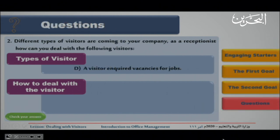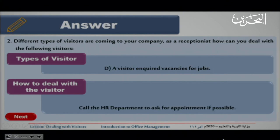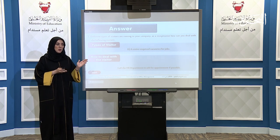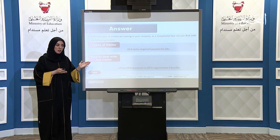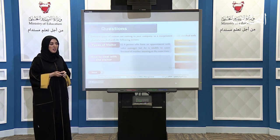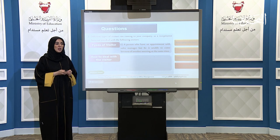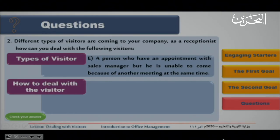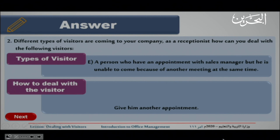Visitor D — a visitor who inquires about job vacancies: call the HR department to ask for an appointment if possible, as the HR department is responsible for searching for employees. Visitor E — a person who has an appointment with the sales manager but is unable to come because of another meeting at the same time: give them another appointment.